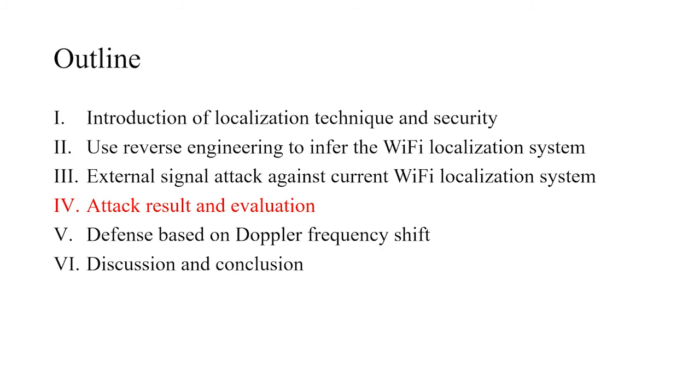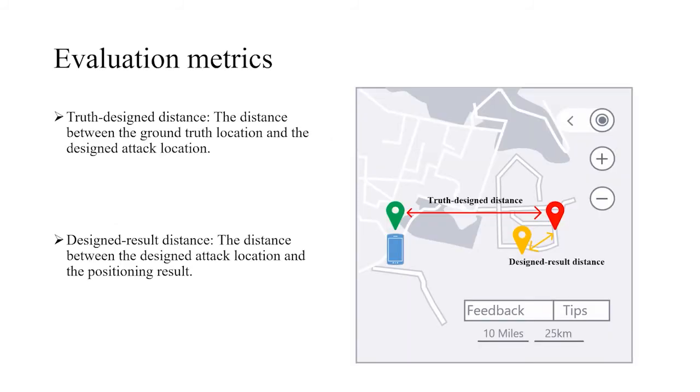After the attack, we may see the attack result and the evaluation. We choose two different evaluation metrics as we can see from this figure. The red one is the truth-designed distance and the yellow one is the designed result distance.